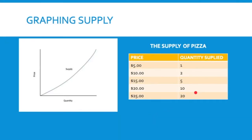Applied to a product: if I run a pizza shop and people would only pay $5 for a pizza, I'm only going to make one pizza because it's not really worth it to make a lot for $5. If people would pay $10, I'll produce two pizzas. If $15, I'll produce five. As the price goes up, if it costs $3 to make a pizza, at $5 I get $2 profit, but at $10 I'd get $7 profit per pizza, so I'd produce two.